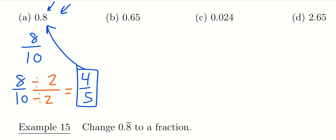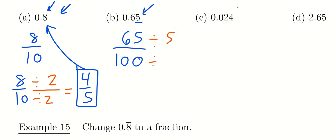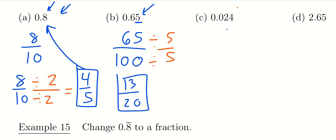For 0.65, we throw away the decimal point and get 65. The last digit, 5, is in the hundredths position, so we put 65 over 100. The GCF of 65 and 100 is 5. Five goes into 65 thirteen times and into 100 twenty times. So 0.65 is equivalent to 13/20.